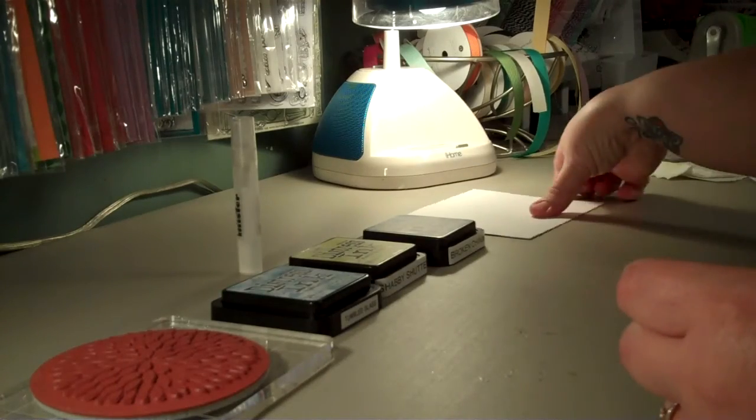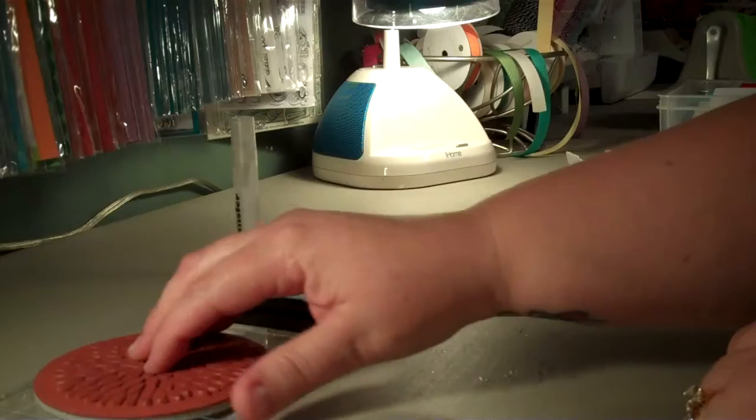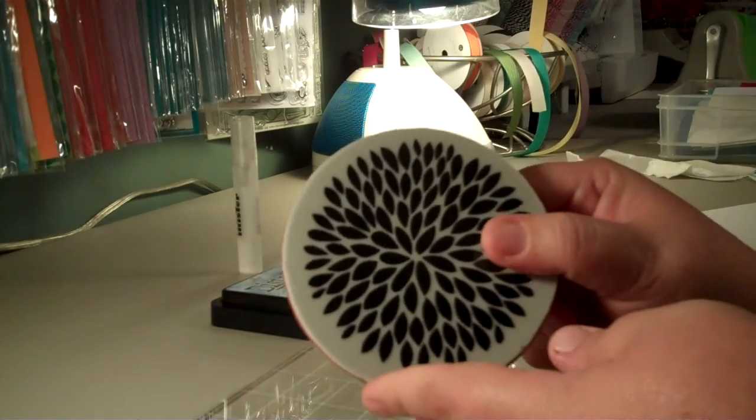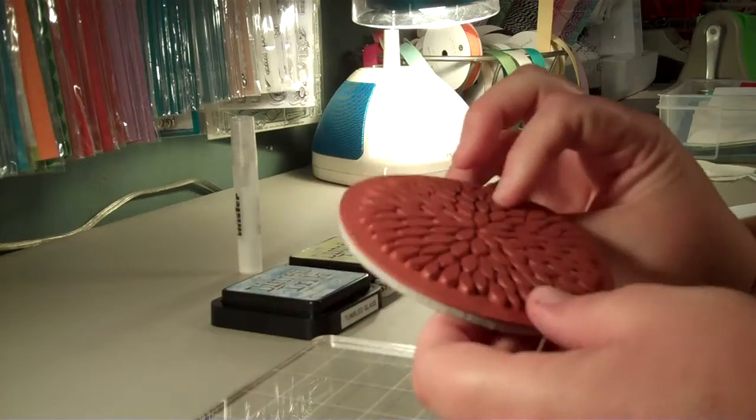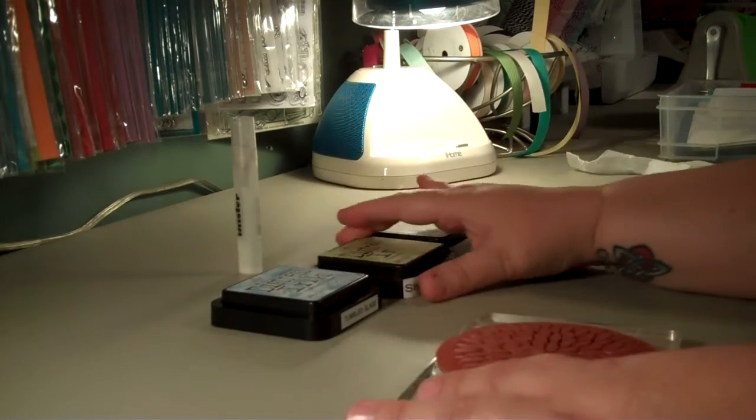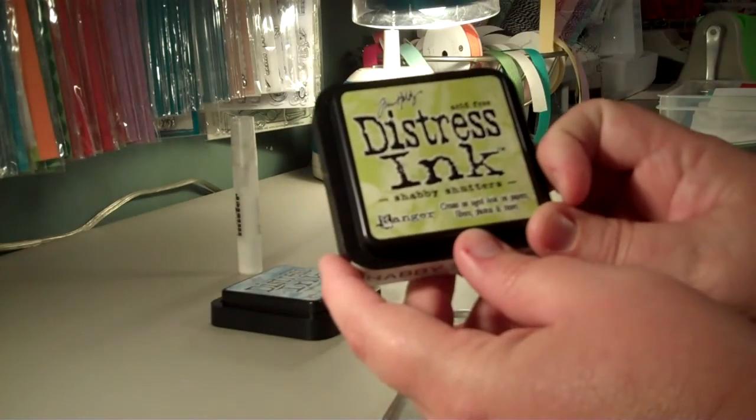I already cut out a card in the size I'm using, and I have my big flower pattern from Hero Arts. I just put that on my acrylic block, and I'm going to use some Tim Holtz Distress Ink. This one is Shabby Shutters.